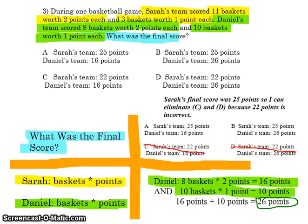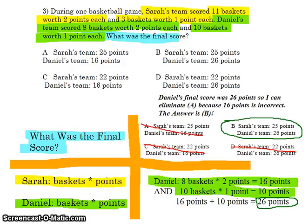Now let's look at Daniel's team. Daniel's team scored 8 baskets worth 2 points each: 8 times 2 is 16. His team also scored 10 baskets worth 1 point each: 10 times 1 equals 10. Adding those together: 16 plus 10 equals 26 points. I can eliminate A because we now know Daniel's team total is 26 points.